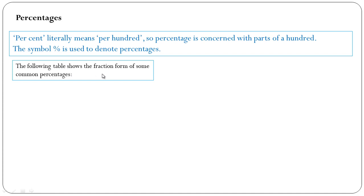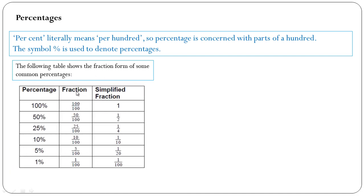The following table shows the fraction form of some common percentages: 100% equals 100/100 which equals 1, 50% equals 50/100 which equals 1/2, 25% equals 25/100 which equals 1/4, 10% equals 10/100 which equals 1/10, 5% equals 5/100 which equals 1/20, and 1% equals 1/100.